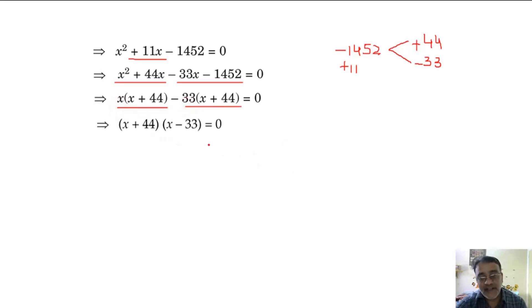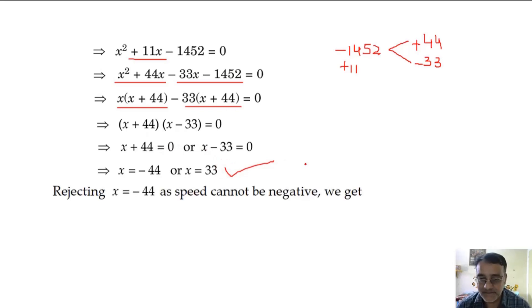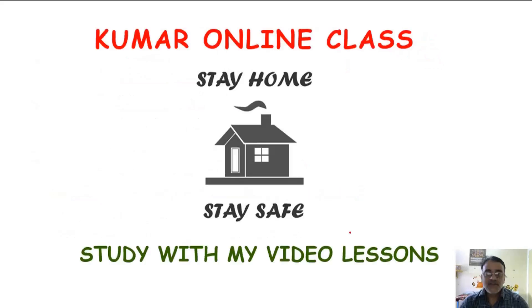Finally we will get two values of x: minus 44 and 33. Again minus 44 we have to neglect as speed can't be negative. So final answer is speed of the passenger train is 33 km per hour and the speed of the express train is 44 km per hour. So that's all for today's session. Thank you very much.